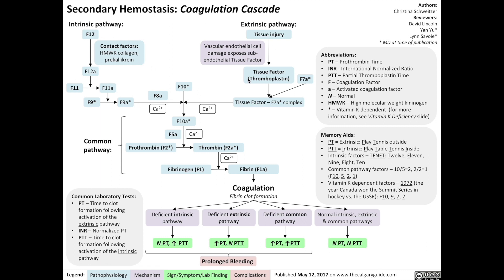Both the intrinsic and extrinsic pathways converge into the common pathway, which involves the activation of factor 10 into factor 10a. Factor 10a, through a process mediated by calcium and factor 5a, cleaves prothrombin (factor 2) into thrombin (factor 2a). Factor 10 is a protease that usually has a low basal rate of prothrombin catalysis; factor 10a only becomes an efficient prothrombin activator once it complexes with factor 5a, which greatly increases the rate at which factor 10a produces thrombin. Thrombin then cleaves fibrinogen (factor 1) into fibrin (factor 1a). It's the fibrin strands that precipitate on top of the platelet plug and result in coagulation — the process of fibrin clot formation.